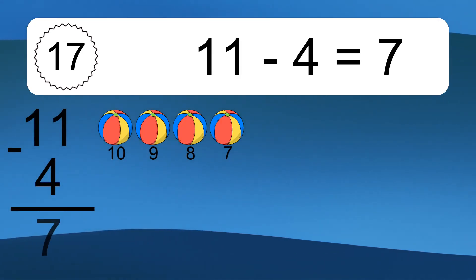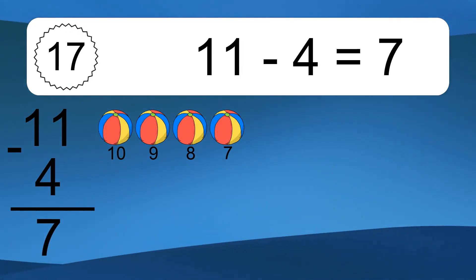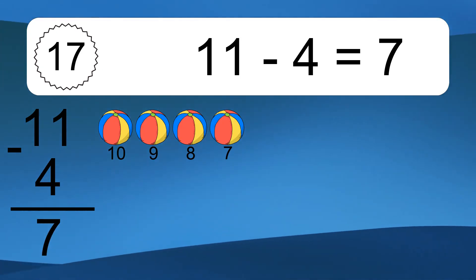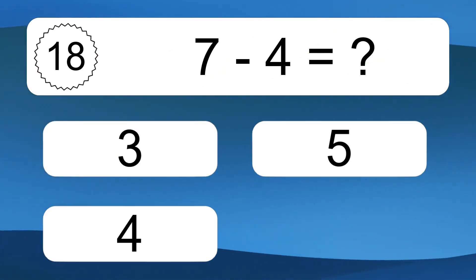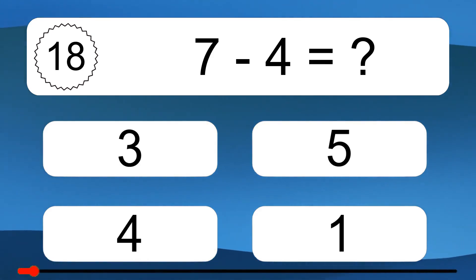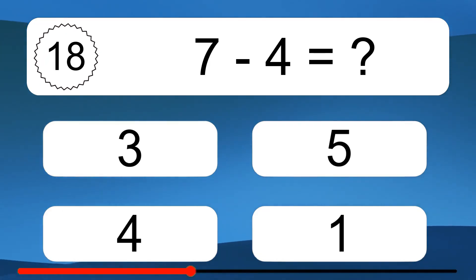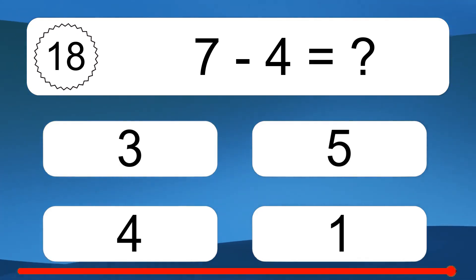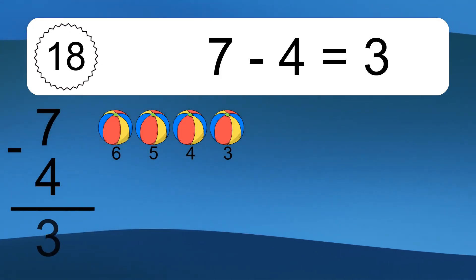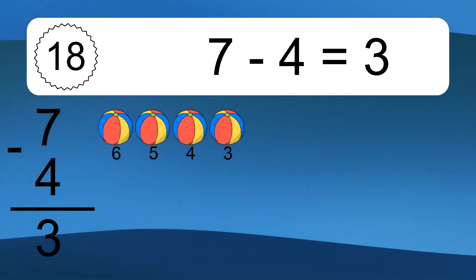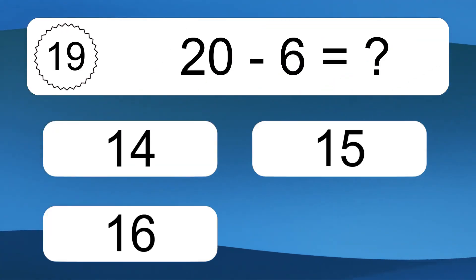11 minus 4 equals what? 11 minus 4 equals 7. Let's count it: 10, 9, 8, 7. 7 minus 4 equals what? 7 minus 4 equals 3. Let's count it: 6, 5, 4, 3.